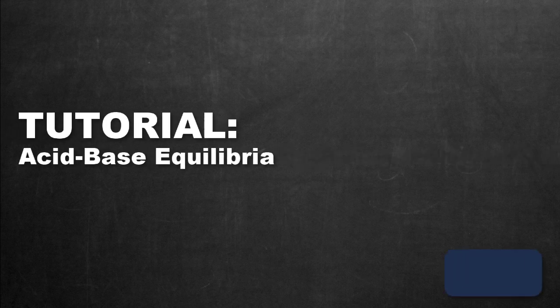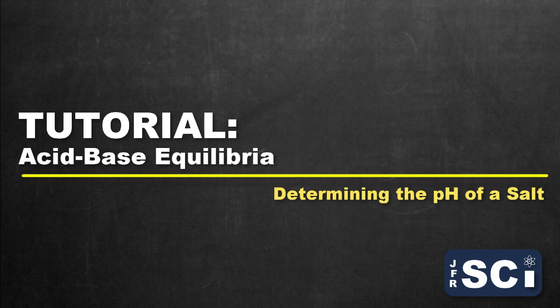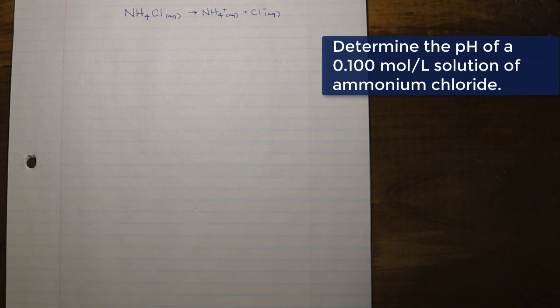Welcome to this tutorial on establishing the pH of readily soluble salts. The problem we're doing is probably one you would find in just about any introductory chemistry textbook: establishing the pH of a solution of ammonium chloride. In this case we're starting with a relatively common concentration of 0.10 moles per liter, and we're going to figure out what the pH of this solution is.